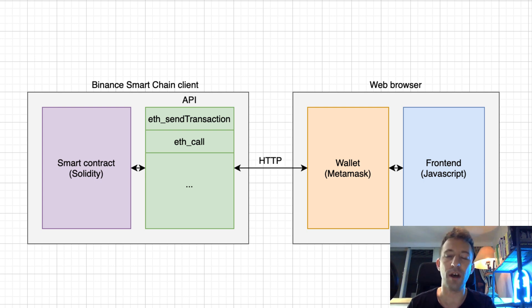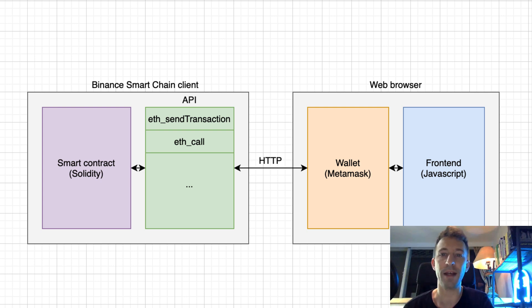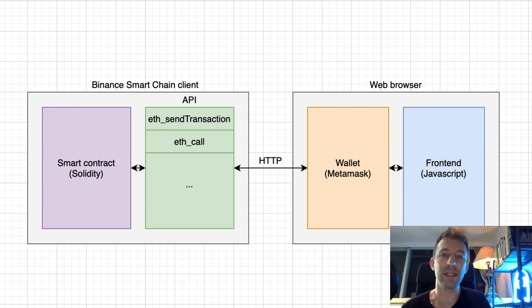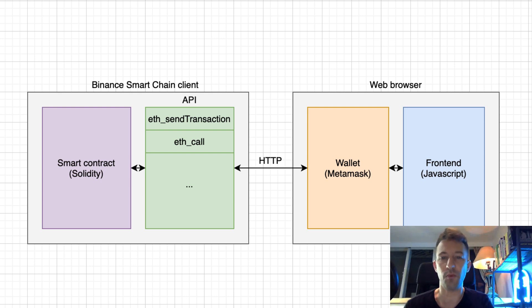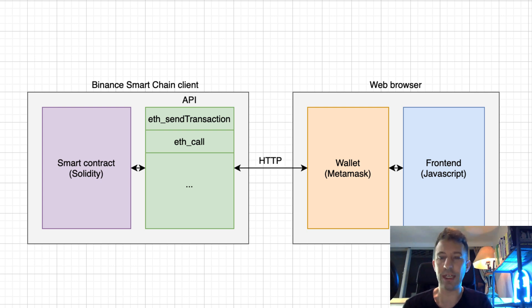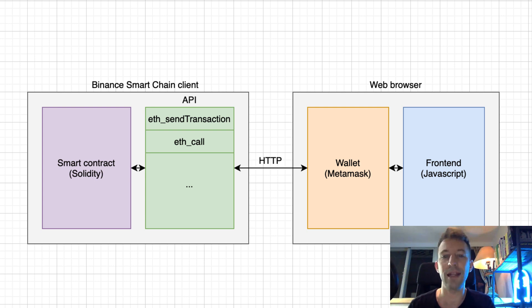Another very important part is the wallet of the user on the front-end. Technically it's not part of our blockchain app, but we still need to interact with it. It's usually a Chrome extension like MetaMask, but it can also be a mobile wallet or a hardware wallet. This wallet is used when we want to send a transaction to the smart contract. The wallet has the private keys of the user and will sign transactions before they are sent to the Binance Smart Chain. One very important detail is that the private key never leaves the wallet — our blockchain app will never have access to these keys. The JavaScript code will just ask the wallet: 'I want to send this transaction, can you confirm with the user that he or she agrees to sign it?' The wallet will then show a pop-up to the user, and only if the user agrees will the transaction be signed and sent to the blockchain.